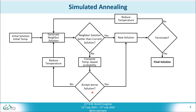If we accept the worse solution, it becomes the new solution and we reduce the temperature again and generate a new neighbor solution. If the worse solution is not accepted, we again reduce the temperature and generate a new neighbor solution from the current solution. This process repeats until the termination criterion is met, and then we receive the final solution of the simulated annealing algorithm.